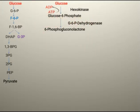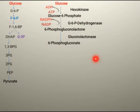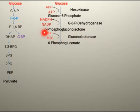The hydrogen removed is picked up by NADP, which is converted into NADPH. Then, 6-phosphogluconolactone is converted into 6-phosphogluconate with the help of the enzyme gluconolactonase, and in this step water is utilized.